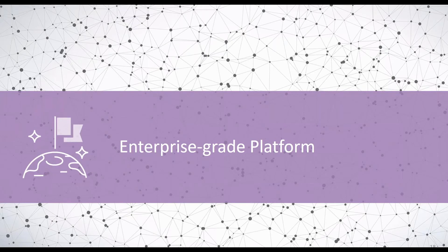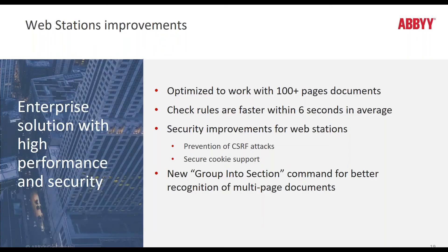Now let's move on to enterprise-grade platform improvements within Update 2. We have made several webstation improvements to make it more reactive and faster. Webstation performance has been optimized to work with even bigger document sizes, and rule checking is even faster. The group intersection command is now implemented into web stations for better recognition of complex multi-page documents, and there have been several additional security improvements made for web stations.